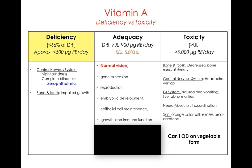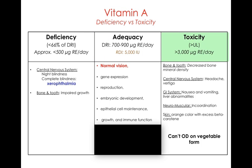Vitamin A deficiency also affects growth of bone and teeth. Vitamin A is involved in normal vision, gene expression, reproduction, development of the embryo, epithelial cells, growth, and immune function. Toxicities include decreased bone density and mineralization, headaches, nausea and vomiting, and lack of coordination.